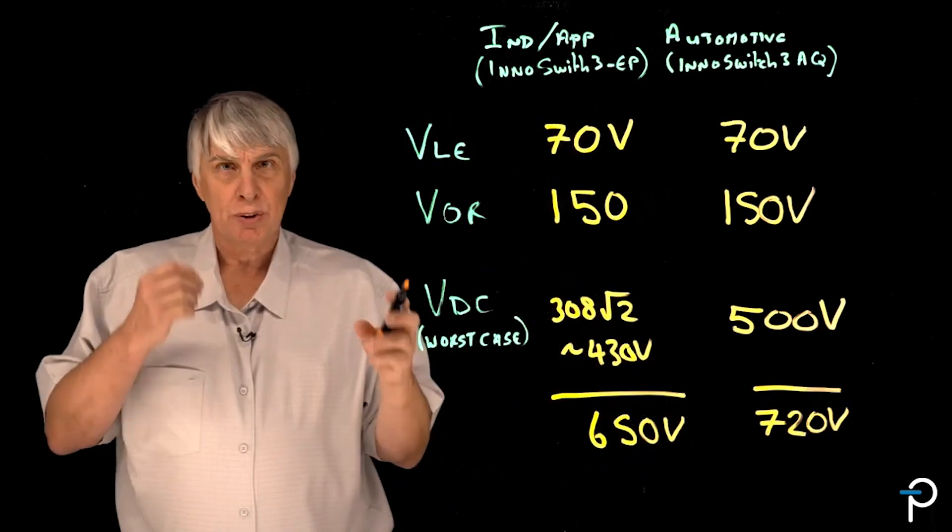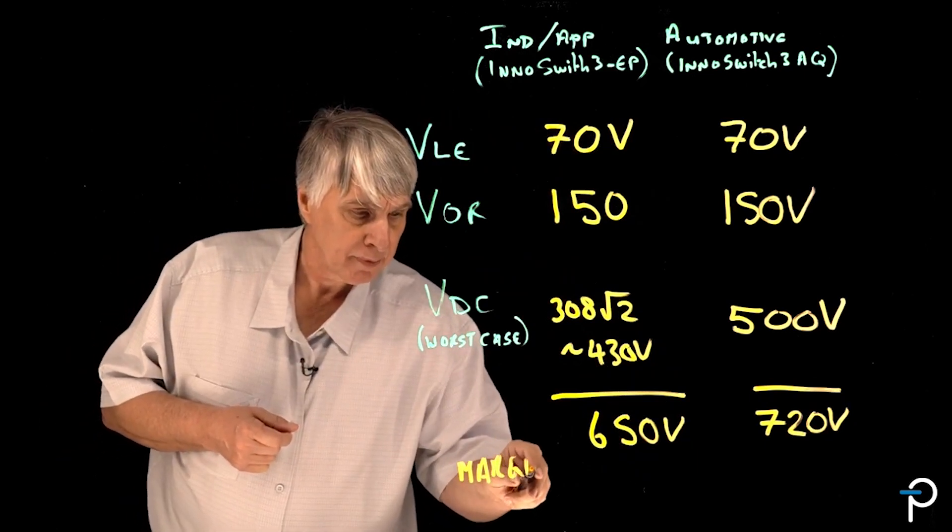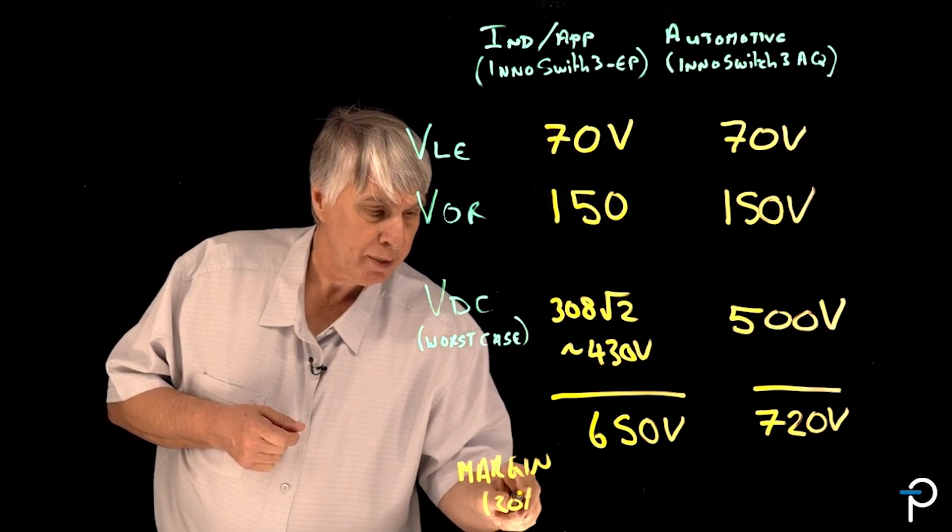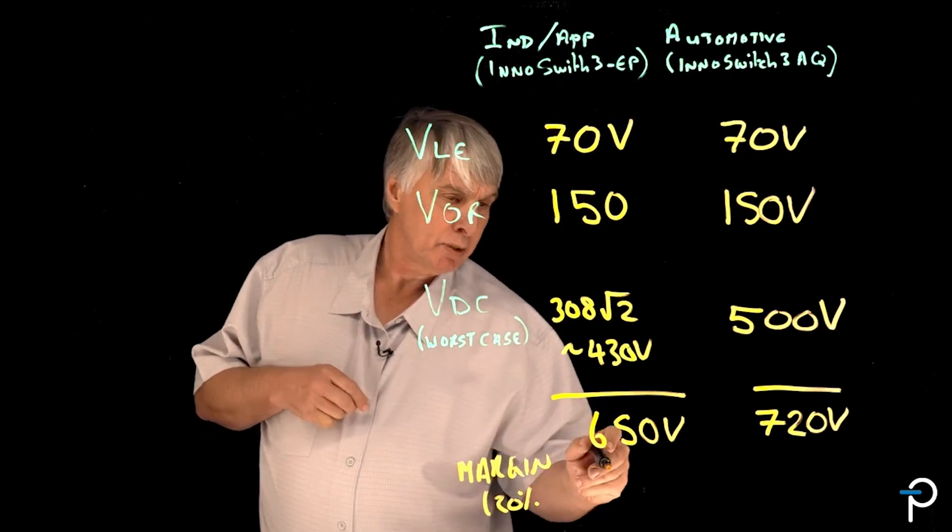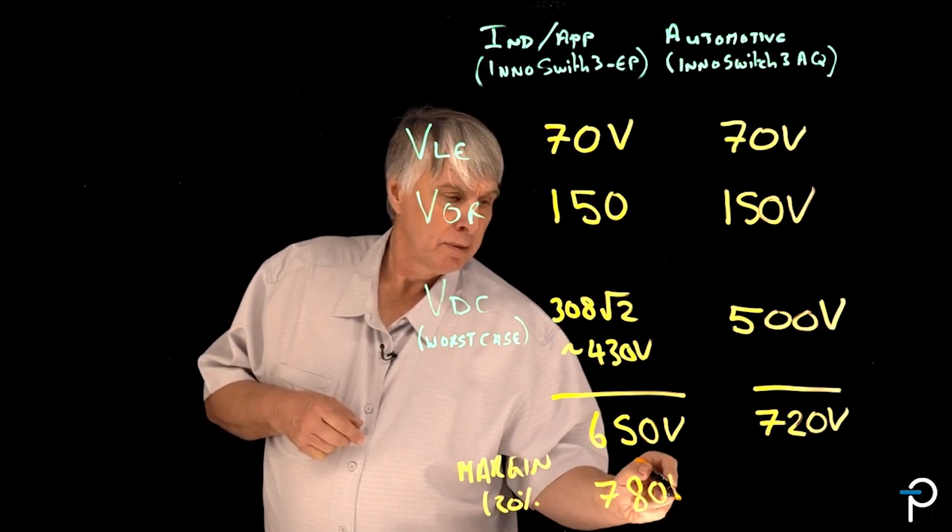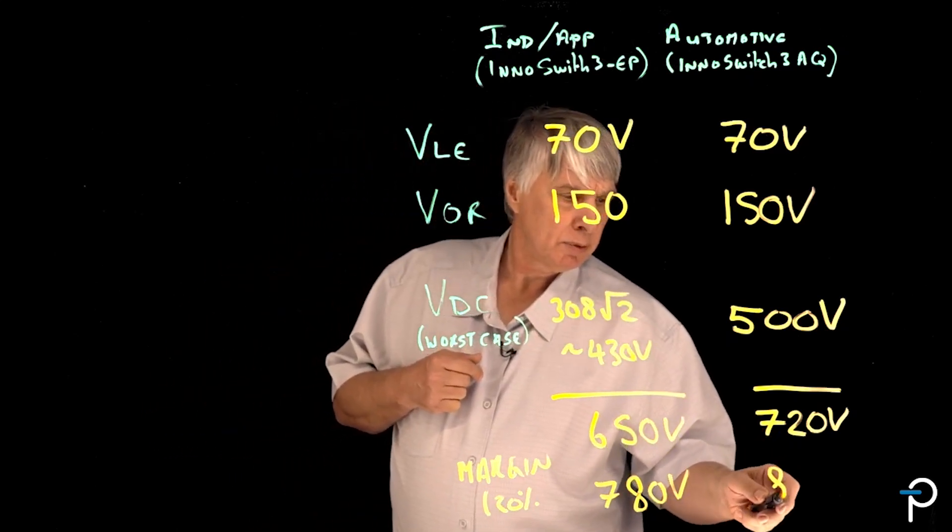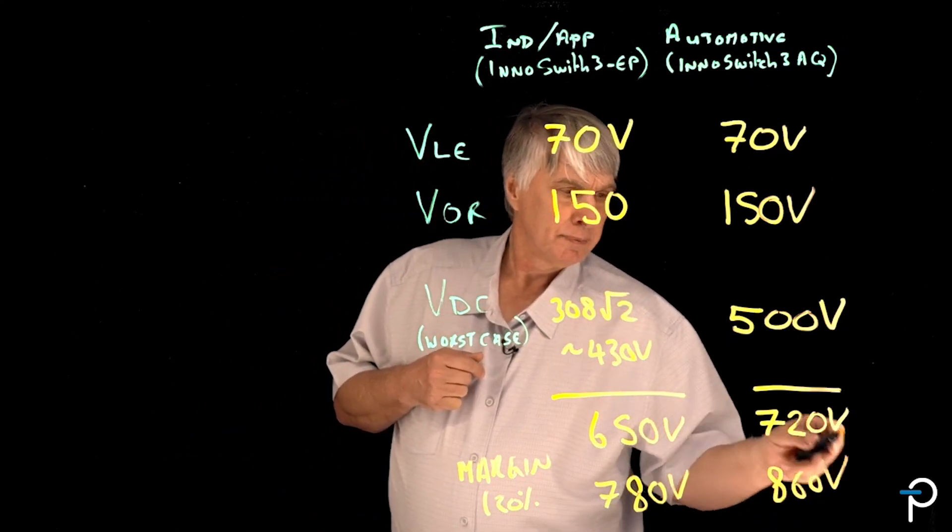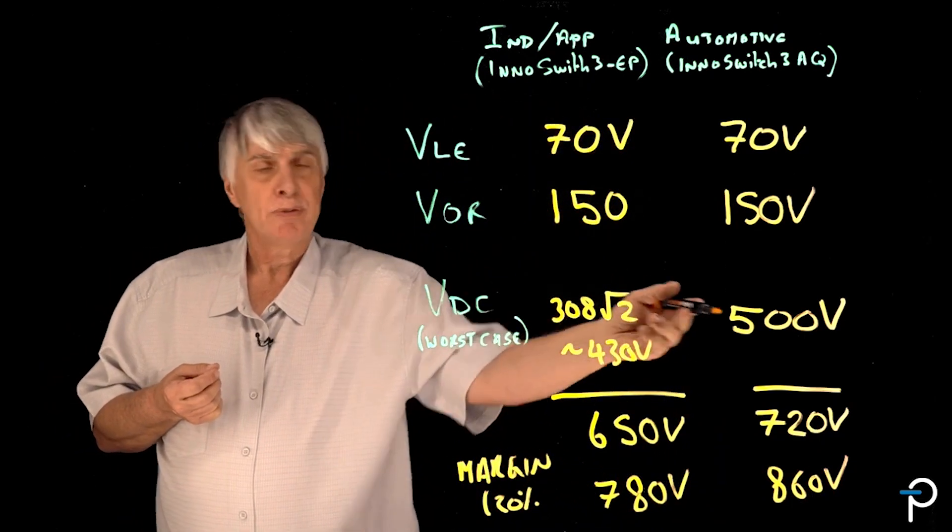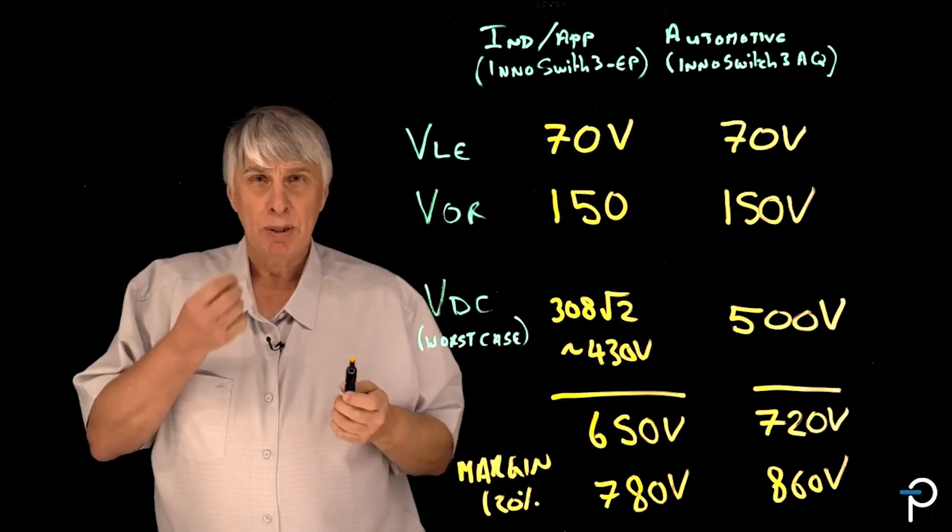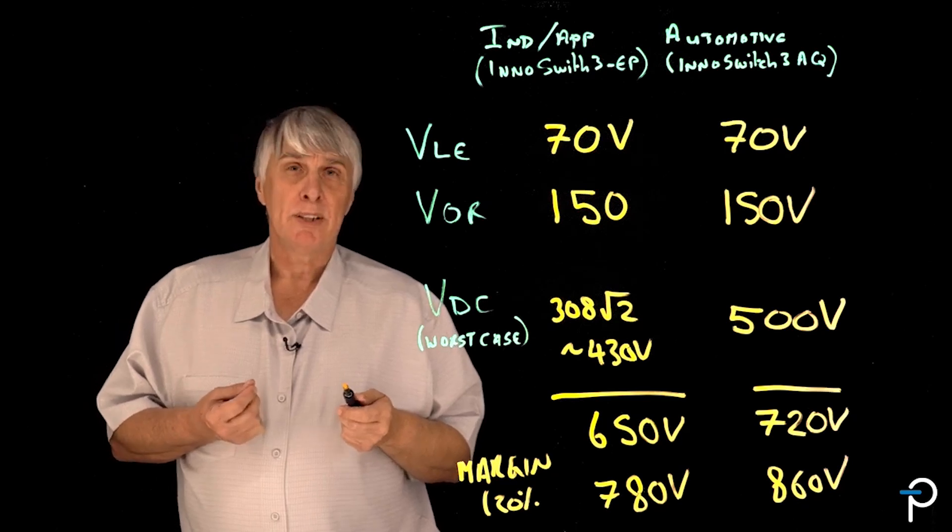Now if we add these together we get 650 volts and for the automotive application we get 720 volts. We want to add some margin onto this for a safe design so let's add some margin. 20 percent derating would be nice, that would give us 130, that would be 780 volts. And this one would be 140 which would make it 860 volts. So you can see that despite the fact that the input voltage is only 400 or 500 volts, the stress on the transistor can be quite a lot higher than that.